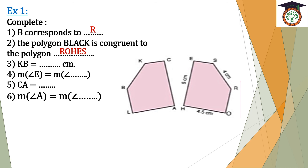Number three: KB equals — from congruence, KB equals SR, and SR is equal to four centimeters. Number four: measure angle E equals measure angle C. CA equals EH, excellent. Measure angle A equals measure angle H, excellent.